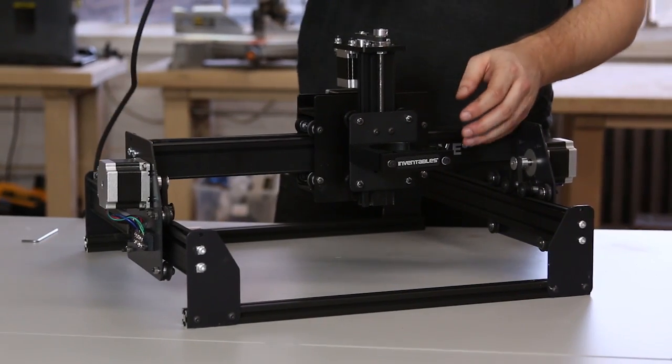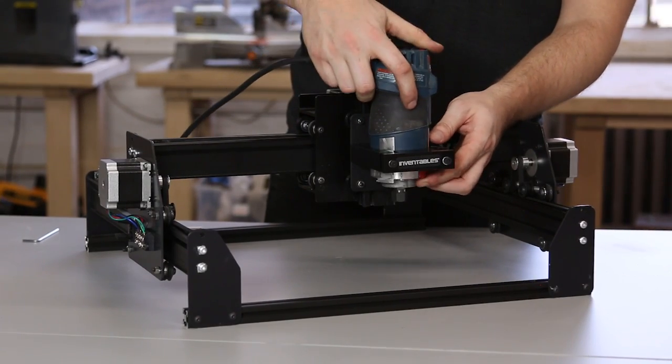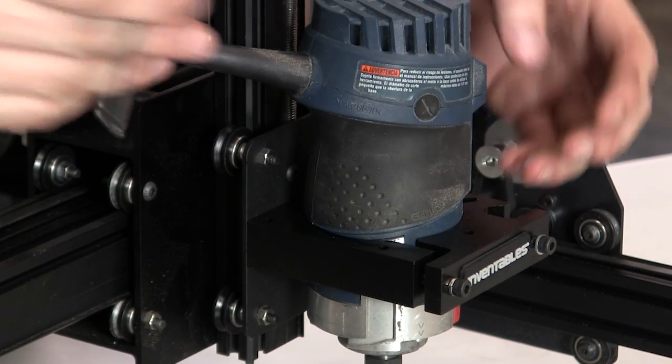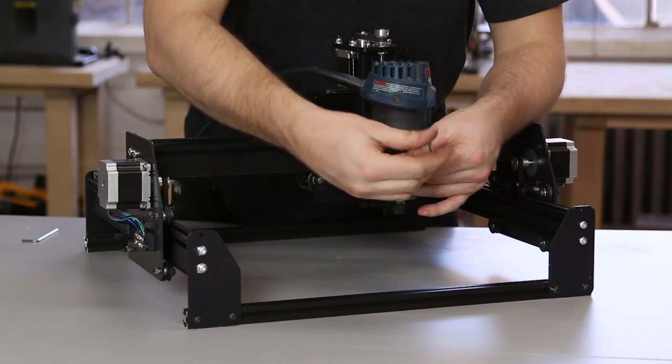Put your Bosch Colt back into the mount and tighten the clamping screw as hard as you can.